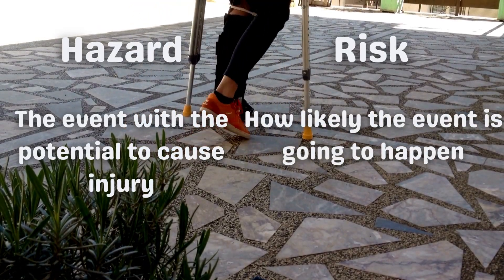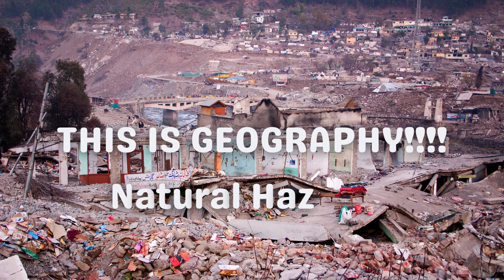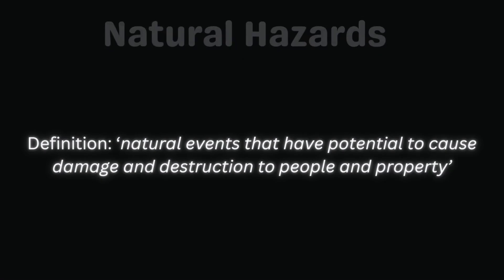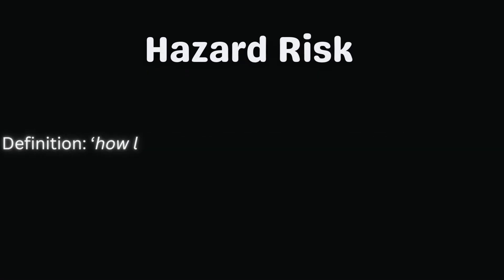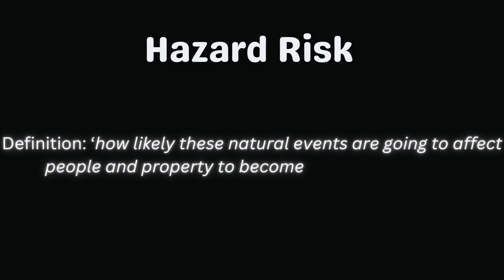Well, this is all about hazard and risk. The hazard is the event that has the potential to cause injury, and the risk is how likely that event is to happen. But this is geography, and geographers study natural hazards. These are natural events that have the potential to cause damage and destruction to people and property. The risk is how likely those natural events are going to happen and affect people and their property, and that will eventually become a natural disaster.